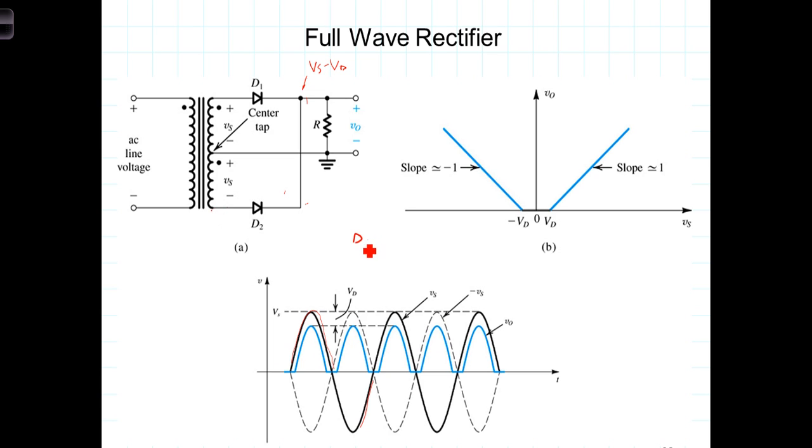So we have then the peak inverse voltage is equal to V sub S minus V sub D minus the voltage on this side, which is minus V sub S, where the peak inverse voltage is then 2 V sub S minus V sub D.